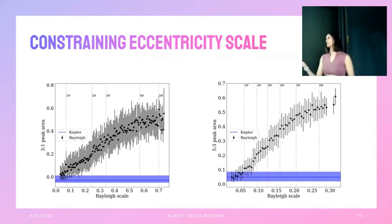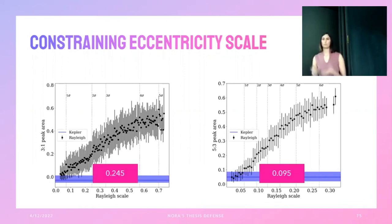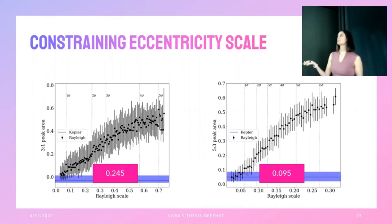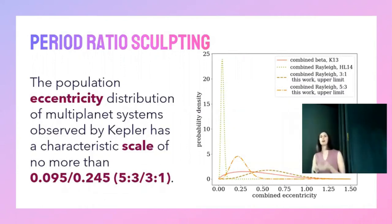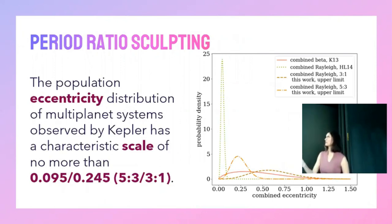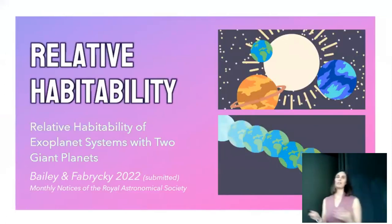On the lower end we can't distinguish between some eccentricity scales, but this allows us to place an upper limit. The two-sigma line, giving 95% confidence, gives us an eccentricity scale for each resonance. The Kepler planets have an eccentricity distribution with a scale below this threshold — consistent with previous results but found using an entirely new and independent method.